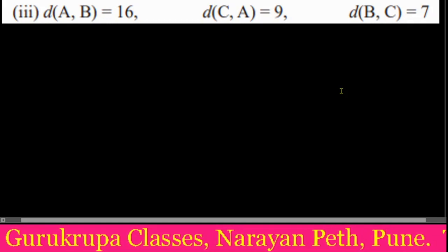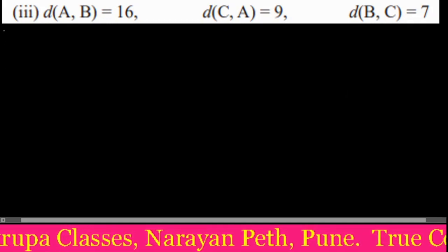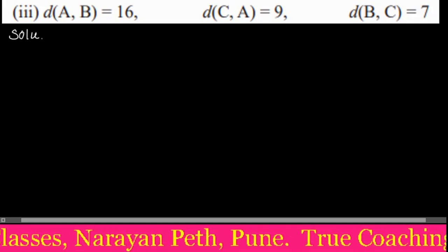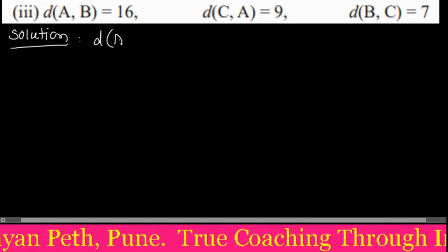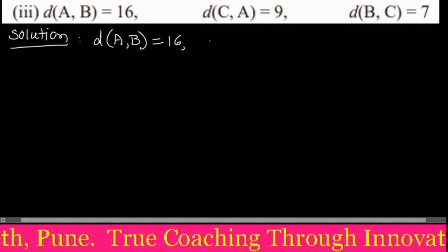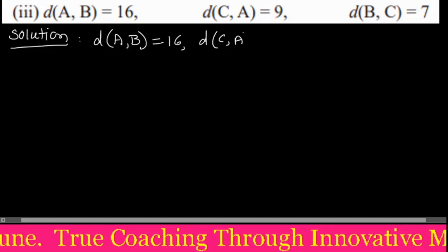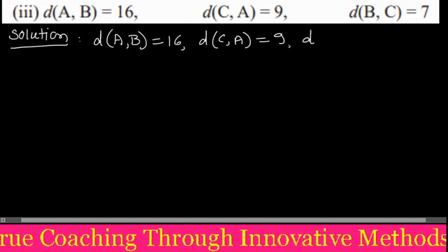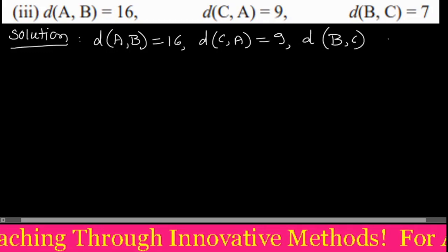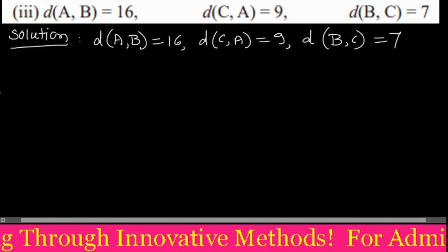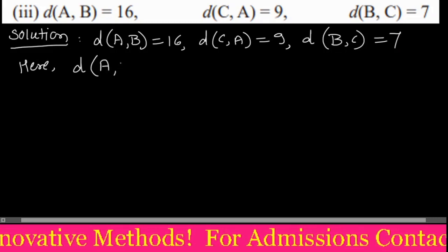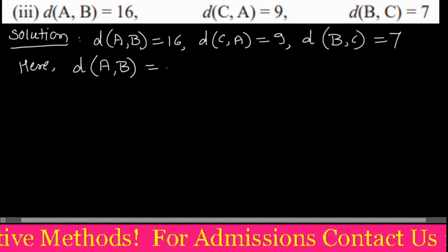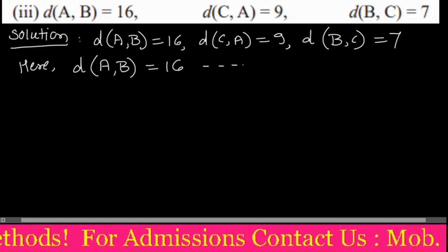Here we can see that three points A, B, and C are given. In the solution we write down the distances: distance AB is 16, distance CA is 9, and distance BC is 7. Now we take the greatest distance first — distance AB is the greatest at 16.